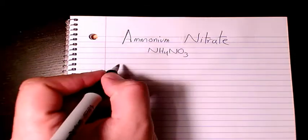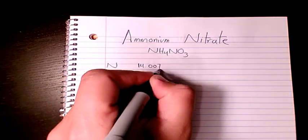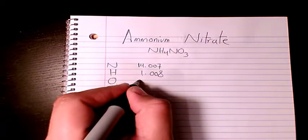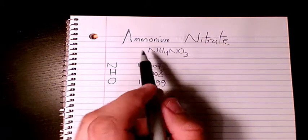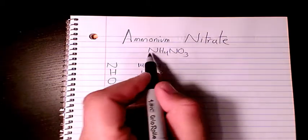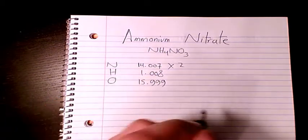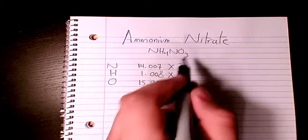Nitrogen is 14.007, hydrogen is 1.008, oxygen is 15.999. How many atoms of nitrogen do we have? We have two - one plus one. How many hydrogen? Four of them, so multiply by four. And how many oxygen? Three of them.